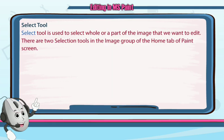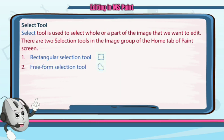There are two selection tools in the image group in MS Paint. The first one is the rectangular selection tool, and the second one is the free-form selection tool.